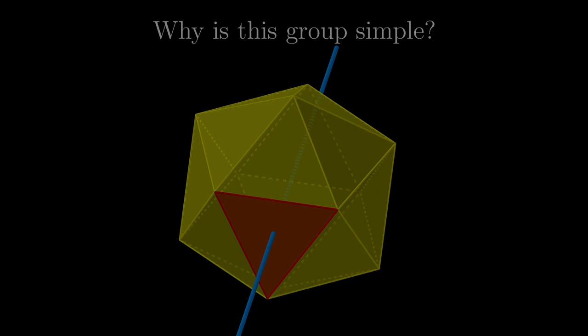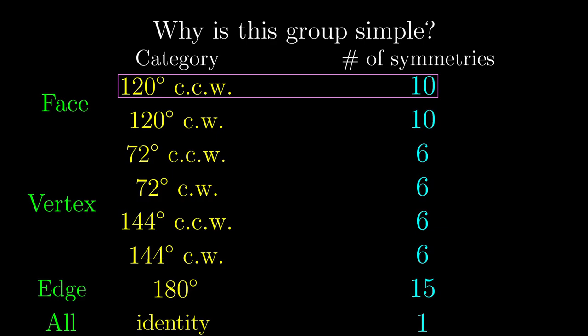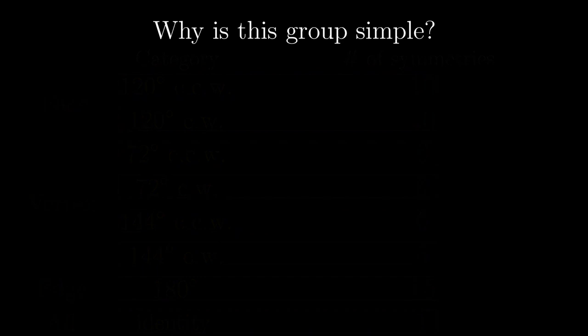So that means, if we pick just one symmetry from the first category as a seed, then simply by normality, the entire category needs to be inside the box. In a similar logic, whenever we pick just one symmetry from a particular category, we have to pick the entire category.